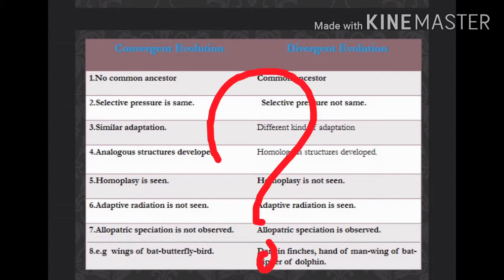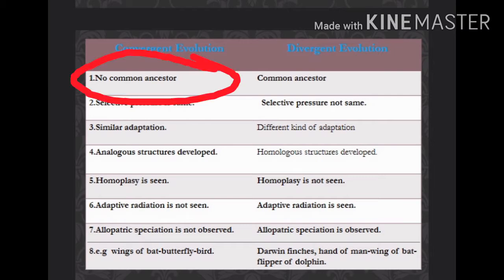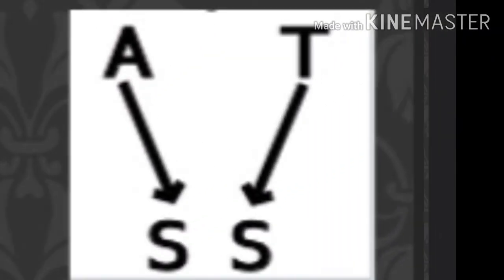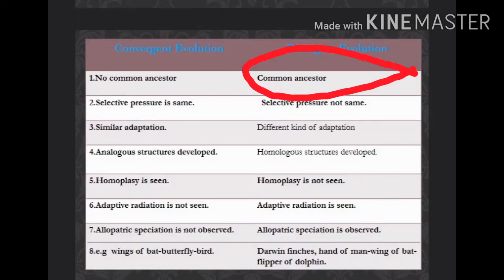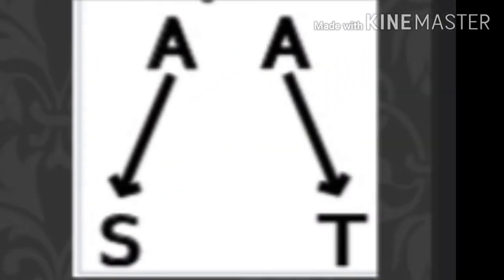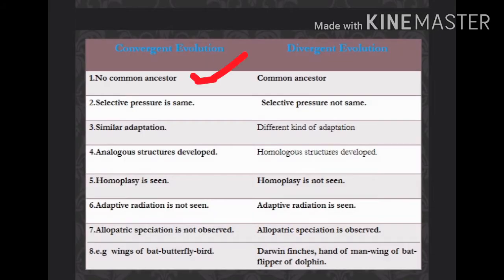Here is the first difference: in convergent evolution, there is no common ancestor. In the case of divergent evolution, a common ancestor is present. So the first difference is convergent evolution has no common ancestor, while divergent evolution has a common ancestor.